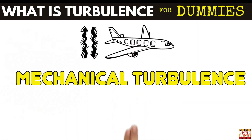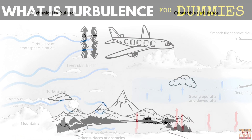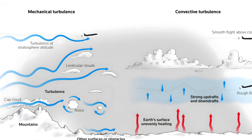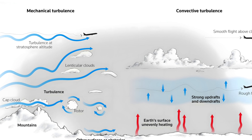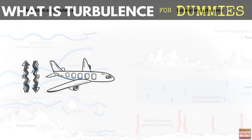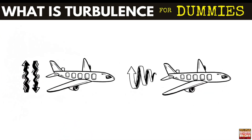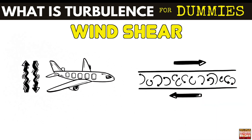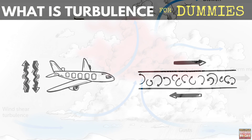Mechanical turbulence depends on landscape and obstacles. Along mountains, for example, strong up and down winds arise. Olivia mentions that preceding planes cause mechanical turbulence too — that's why the pilot had to wait a few minutes before taking off. The third type of turbulence is triggered by wind shears, such as when flying in or out of a jet stream. This has been the case just now.